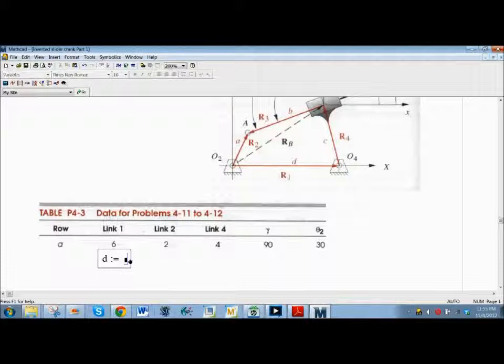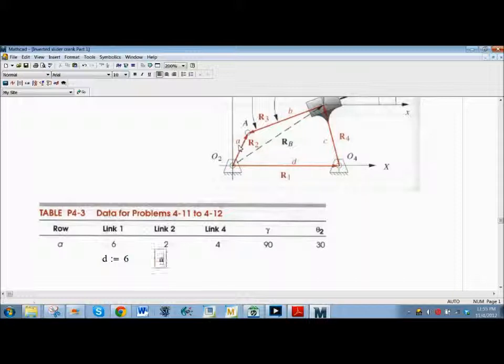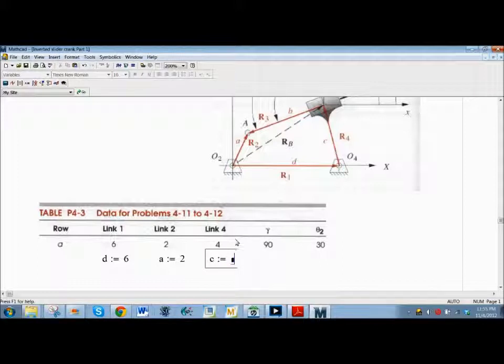So here's a picture of an inverted slider crank and some data to go with it. This is where we're going to start assigning variables. So link one right here will give the variable name D. So D and then you push shift colon gives you the assignment equals, so that is six. Link two is A, it's a little weird to do it in this order but that's the way the picture defines it so we're going to go with it. Link four is C, and that is four. Now we get a little error message here.